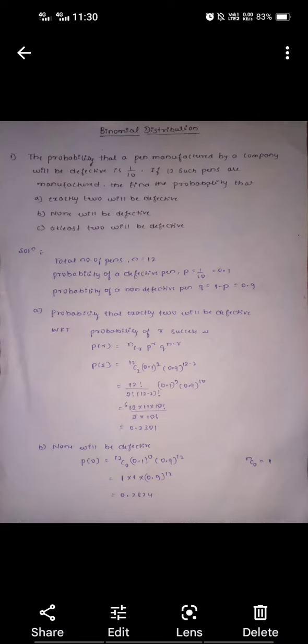Problem A: exactly 2 will be defective. The probability of R successes is P(R) equals nCr times P to the power R times Q to the power n minus R. Exactly 2 defective means R equals 2.